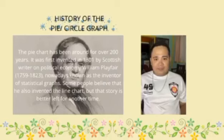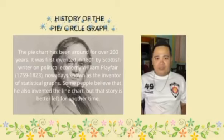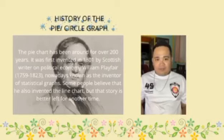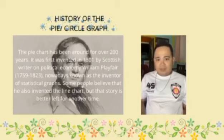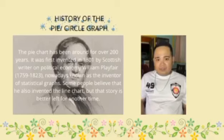The pie chart has been around for over 200 years. It was first invented in 1801 by Scottish writer on political economy, William Playfair, born in 1759 and died in 1823, nowadays known as the inventor of statistical graphs. Some people believe that he also invented the line chart, but that story is better left for another time.